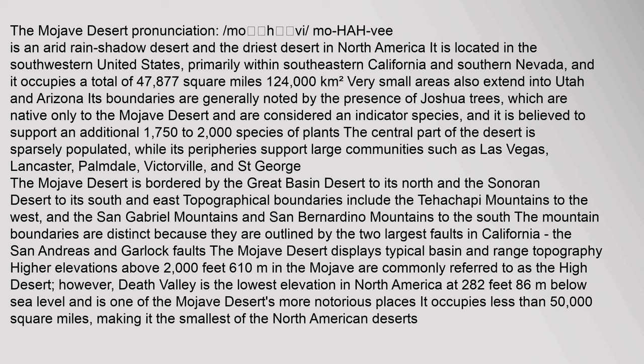The two largest faults in California are the San Andreas and Garlock Faults. The Mojave Desert displays typical basin and range topography. Higher elevations above 2,000 feet (610 meters) in the Mojave are commonly referred to as the high desert. Death Valley is the lowest elevation in North America at 282 feet (86 meters) below sea level and is one of the Mojave Desert's more notorious places. It occupies less than 50,000 square miles, making it the smallest of the North American deserts.